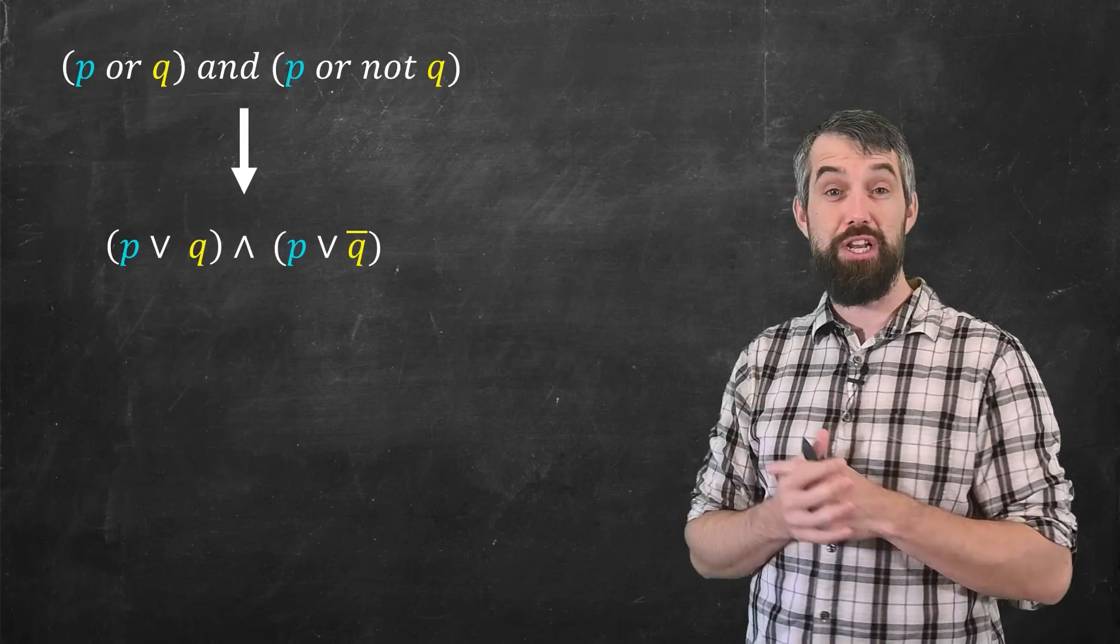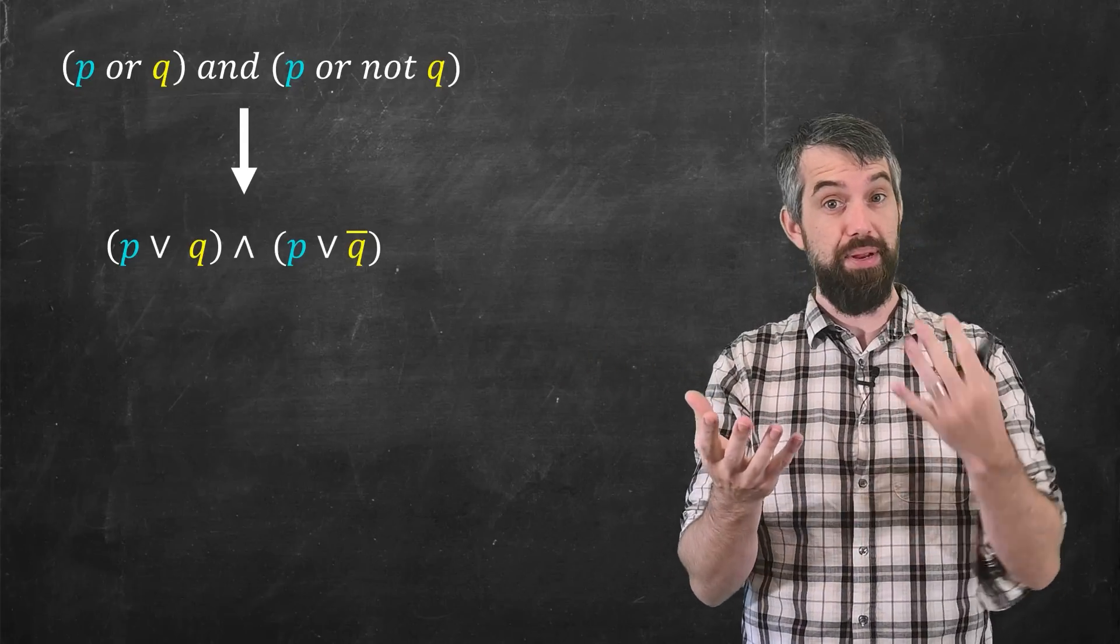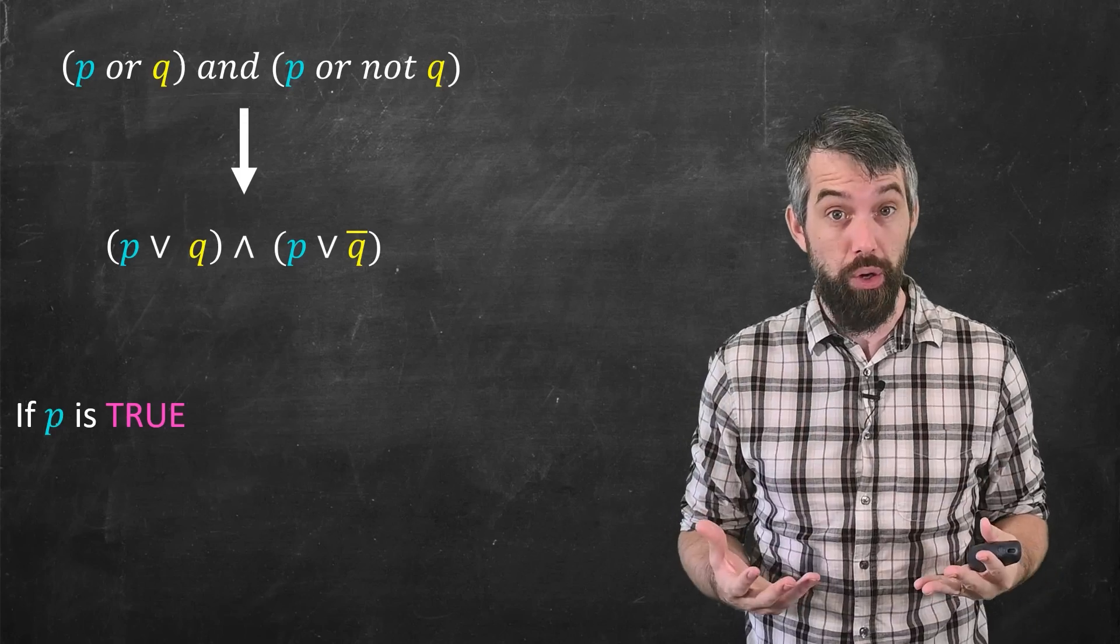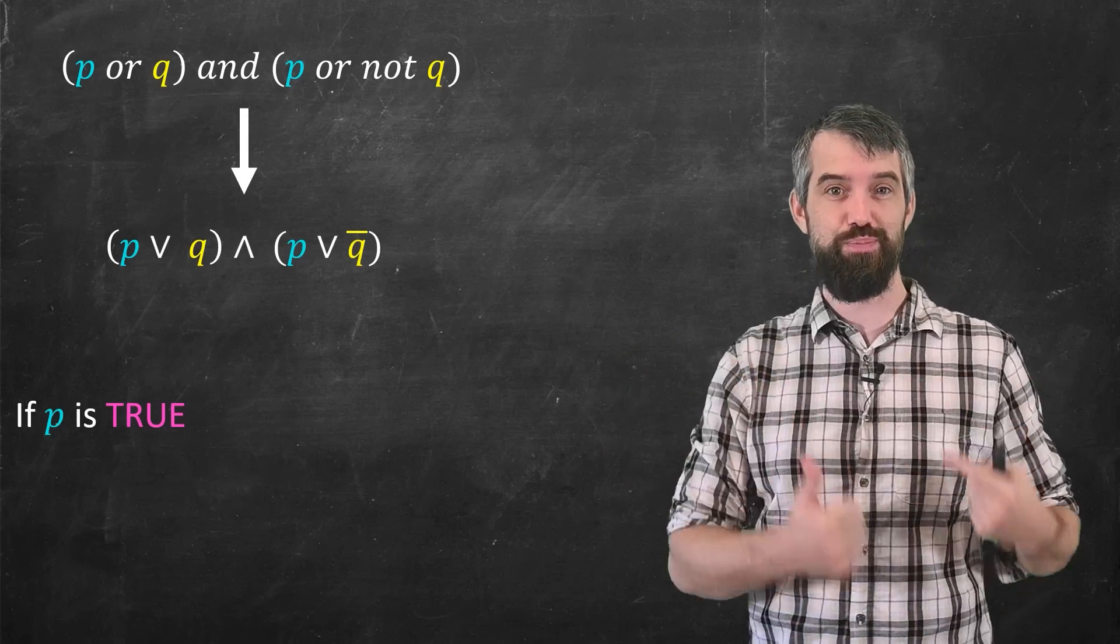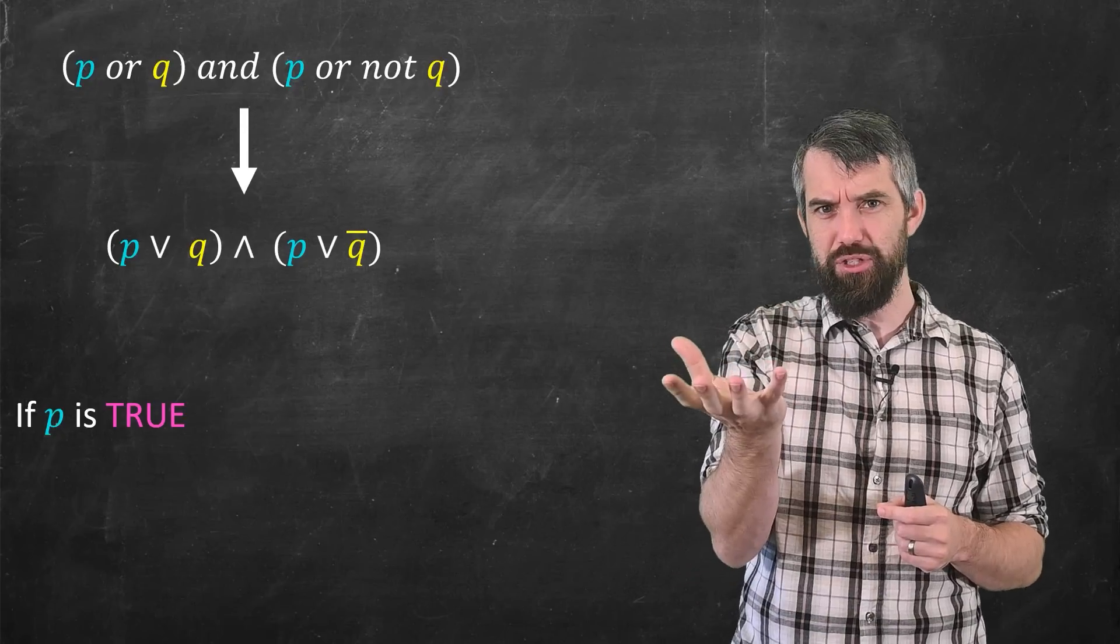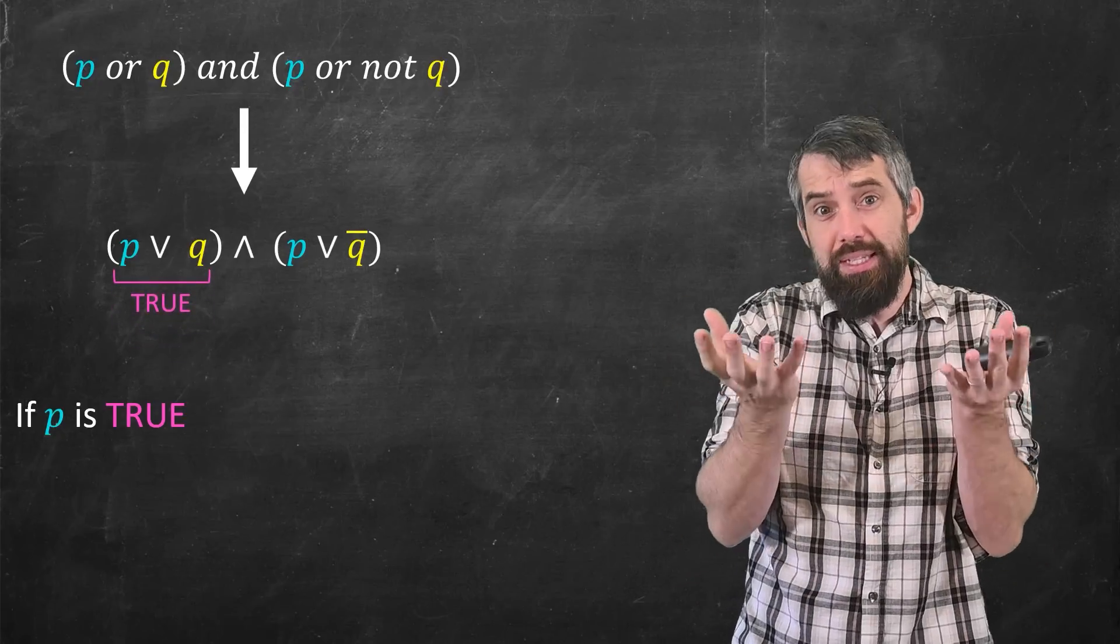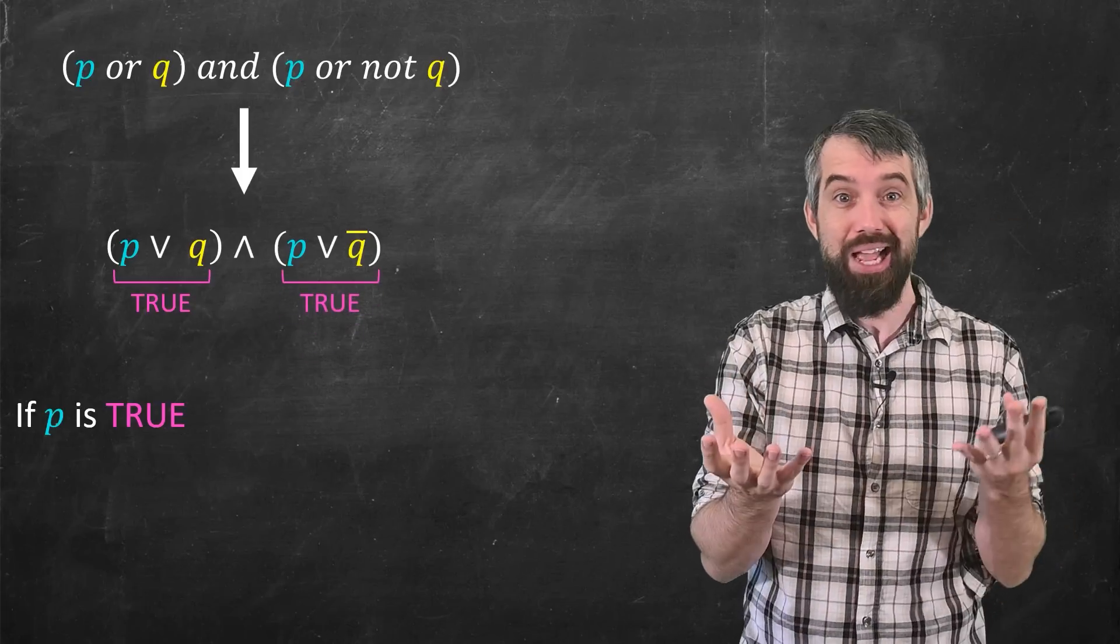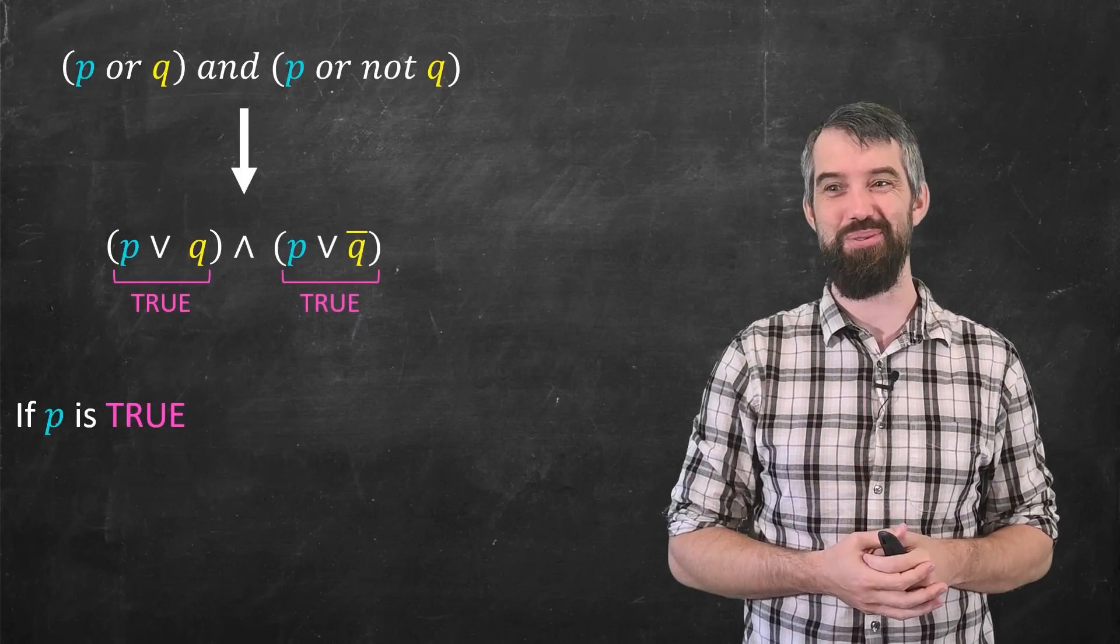And then for NOT, we put this little bar over top of our variables. So that's our shorthand for what we're doing. So now, this expression will be sometimes true and sometimes false, depending on the variables of P and Q. And it turns out that if P is true, then this whole expression is true. Like, if a statement P is true, then P OR Q is definitely true. Similarly, if P is true, then P OR NOT Q is going to be true. Turns out not to matter whether Q is true.